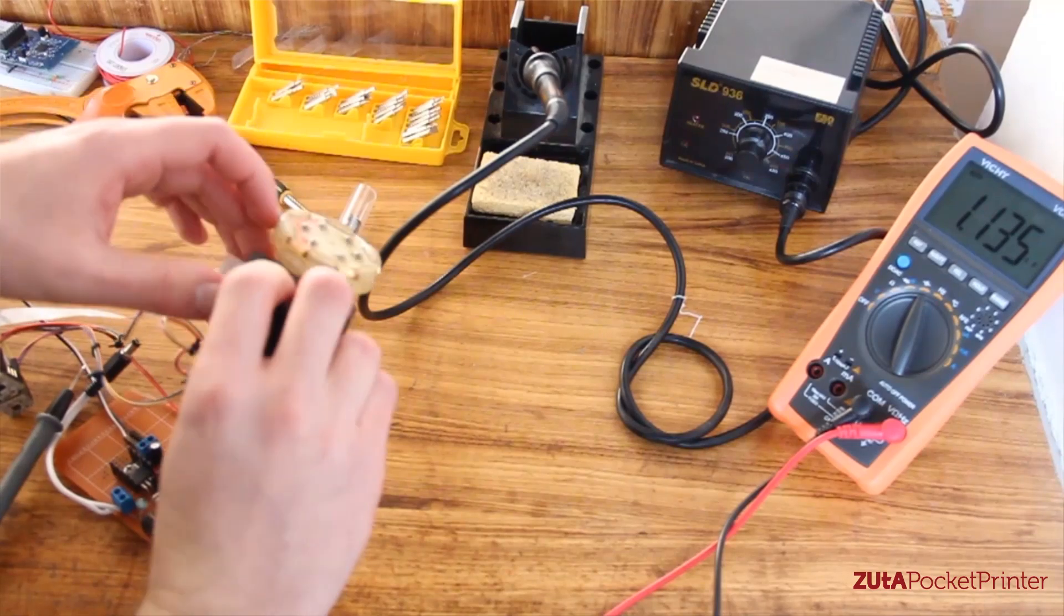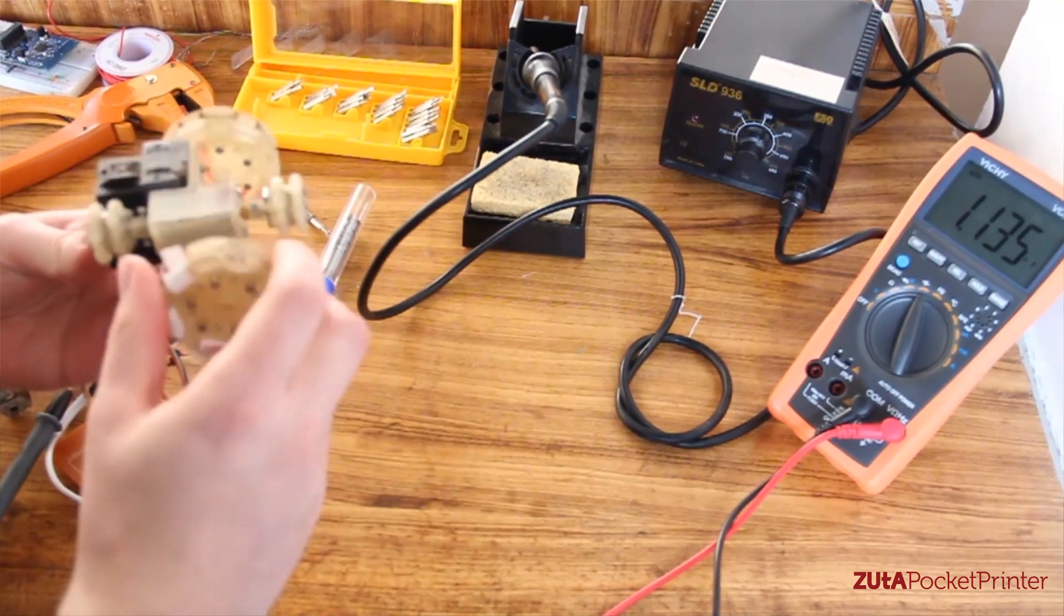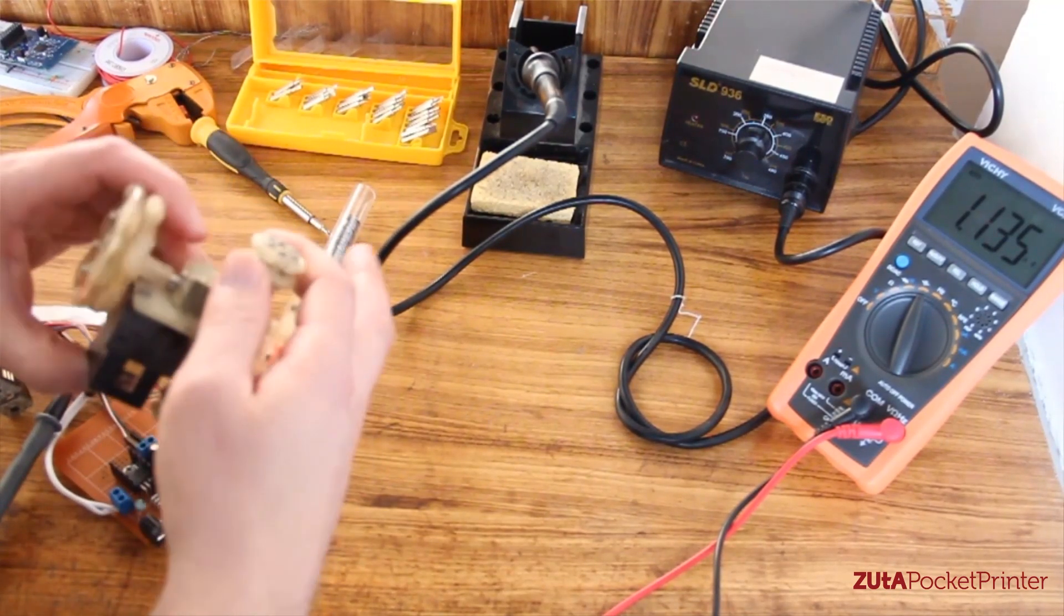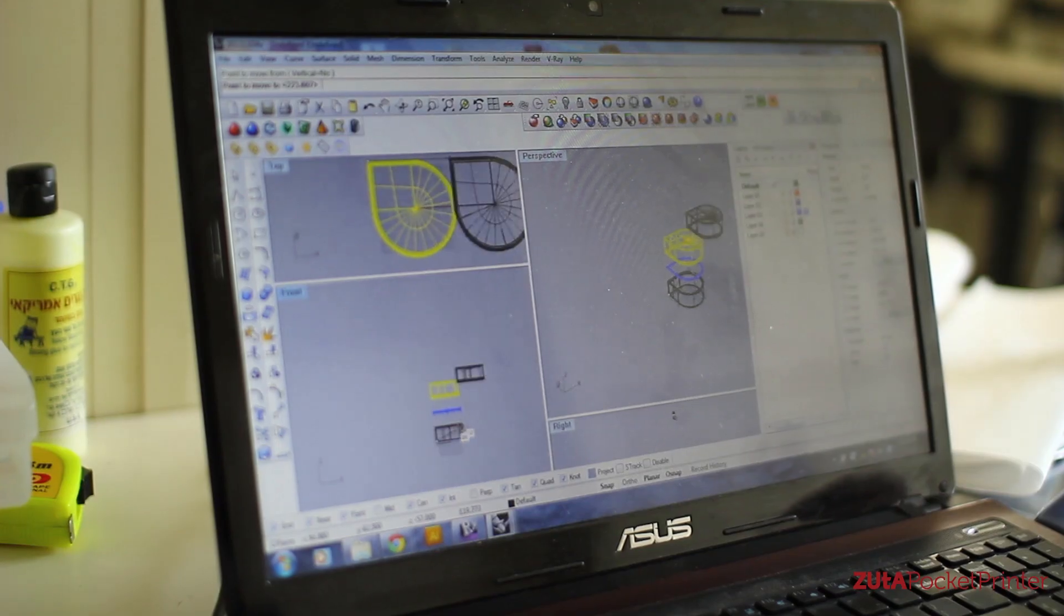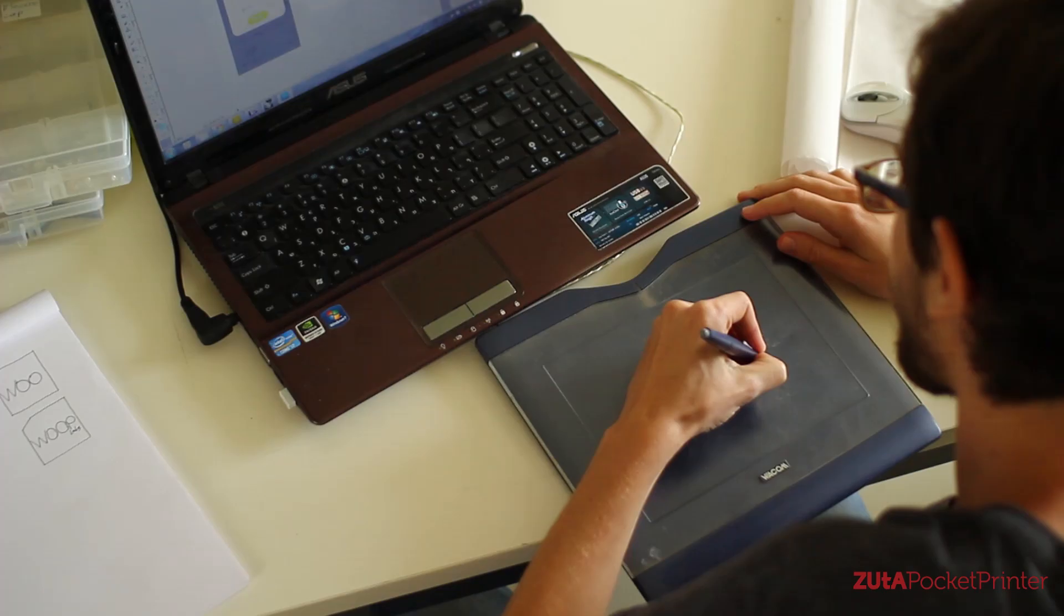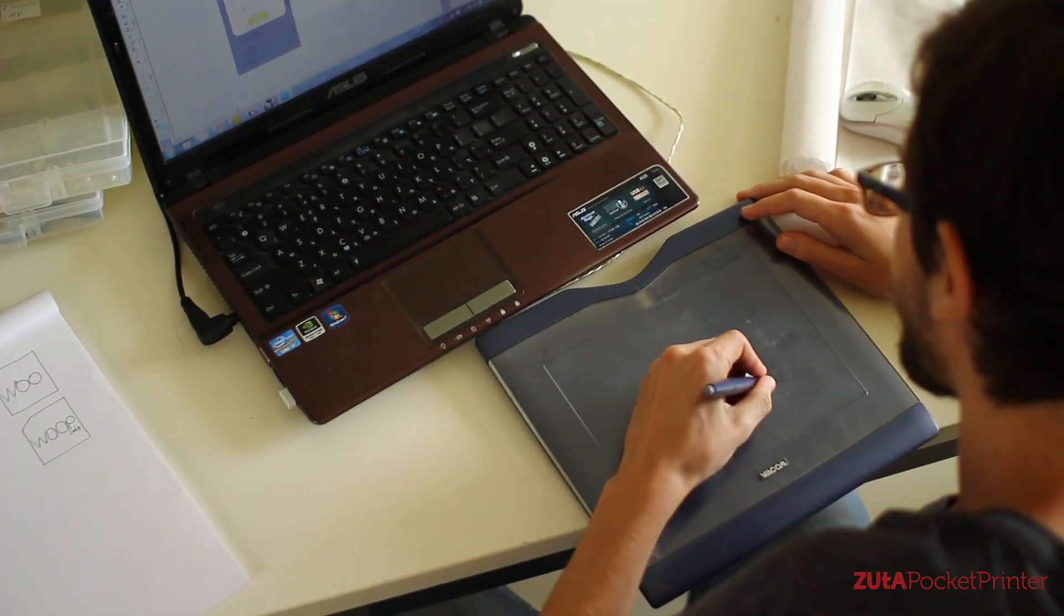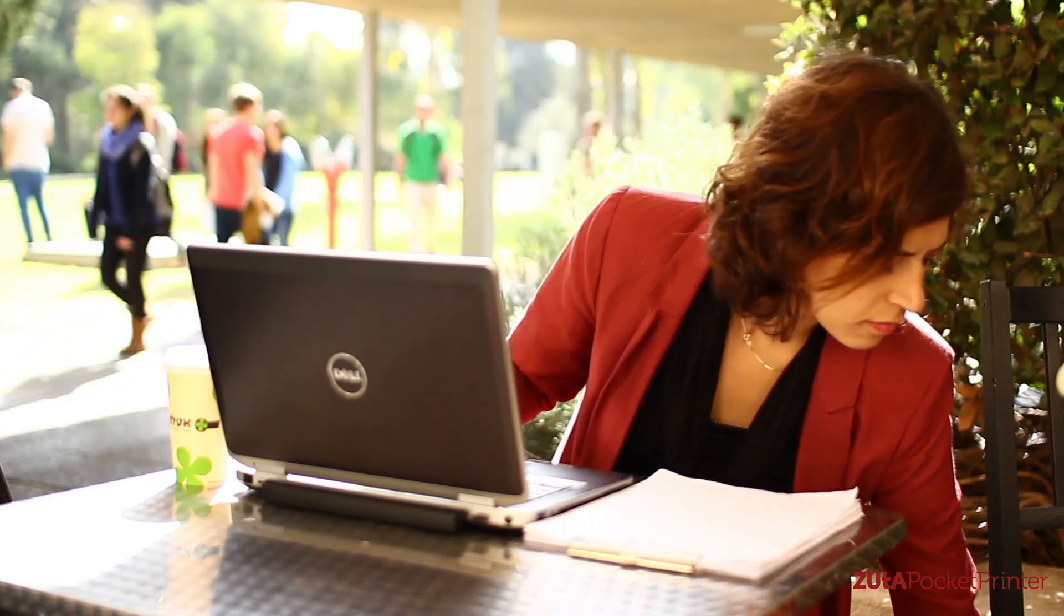When we first started thinking about creating the printer, the most important thing was that it should be small. We knew we had to utilize every single inch. We wanted a pocket-sized printer that can print on any size of paper with precise images. We want people to take it everywhere and use it, not only in the office or at home.